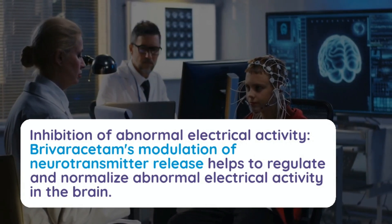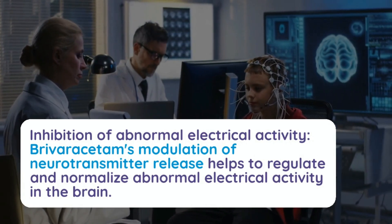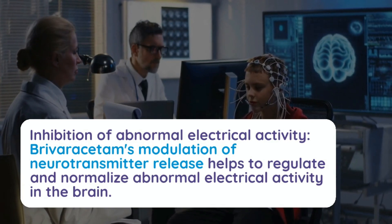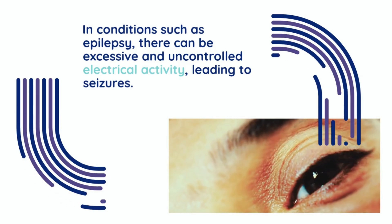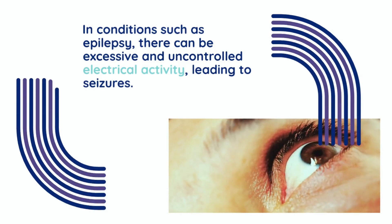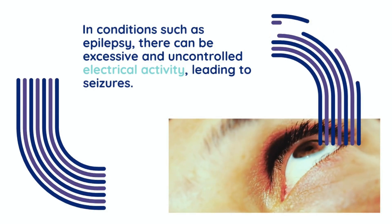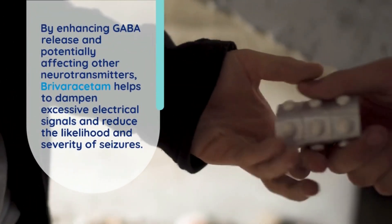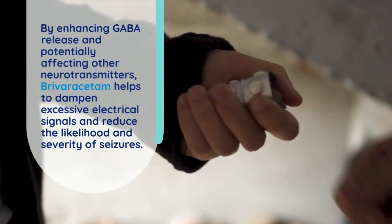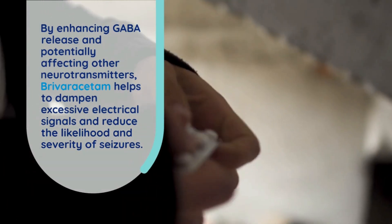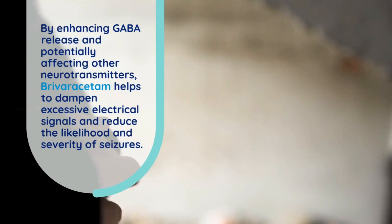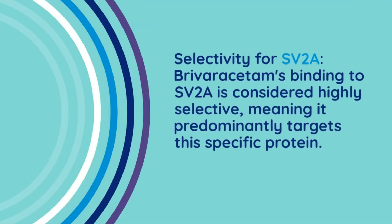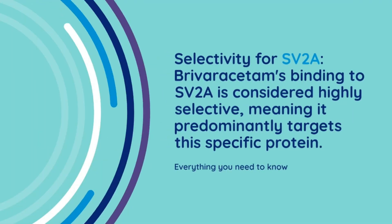Inhibition of abnormal electrical activity: brivaracetam's modulation of neurotransmitter release helps regulate and normalize abnormal electrical activity in the brain. In epilepsy, there can be excessive and uncontrolled electrical activity leading to seizures. By enhancing GABA release, brivaracetam helps dampen excessive electrical signals and reduce the likelihood and severity of seizures.